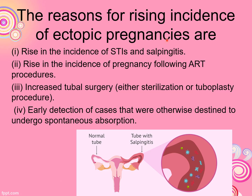What is the reason for the rising incidence of ectopic pregnancies? The first reason is STI — sexually transmitted infection — which leads to more cases of salpingitis and fallopian tube infections. The second reason is increased incidence of pregnancy following ART procedures. When patients with infertility undergo ART treatment, there is a higher chance of ectopic pregnancy.